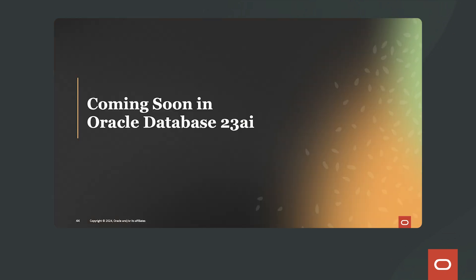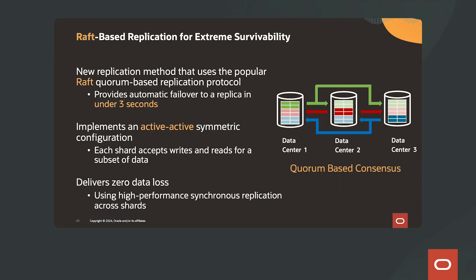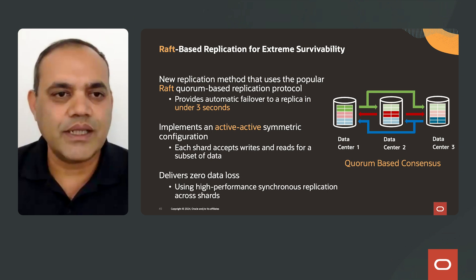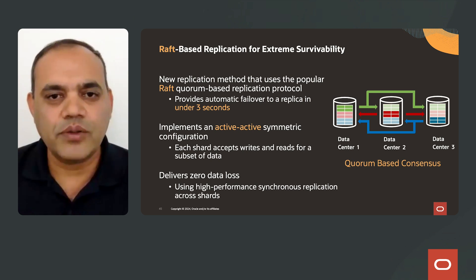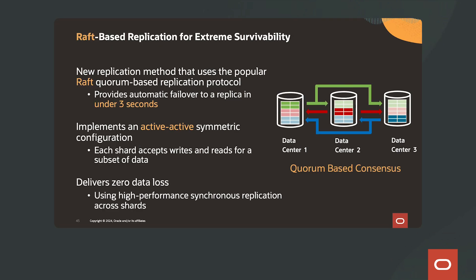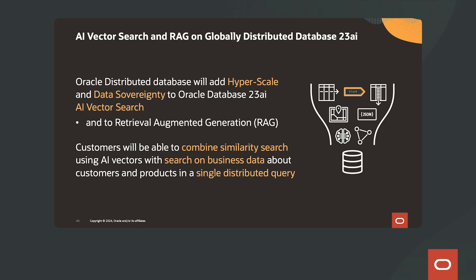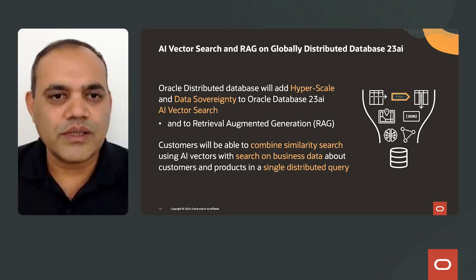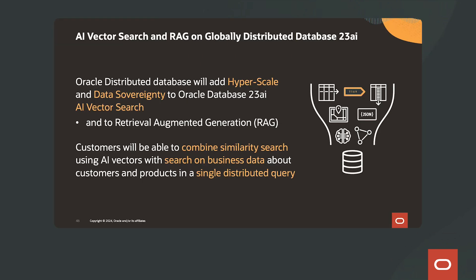There are some exciting features coming soon in Oracle Database 23 AI. One of them is raft-based replication for extreme survivability — a new replication method using the popular raft quorum-based replication protocol, providing automatic failover to a replica in under three seconds. It implements an active-active symmetric configuration where each shard accepts writes and reads for a subset of data, and delivers zero data loss using high-performance synchronous replication across shards. AI vector search and retrieval-augmented generation are also available with Oracle's globally distributed database 23 AI, adding hyperscale and data sovereignty to Oracle Database 23 AI vector search. Customers will be able to combine similarity search using AI vectors with search on business data about customers and products in a single distributed query.